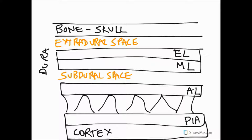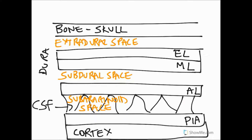Our next layer is called the subarachnoid space, and this is different to the other two because it's actually a true space. We would normally expect to find CSF — cerebrospinal fluid — in there. CSF travels between the arachnoid layer, through those trabeculations, and the pia layer of the meninges.